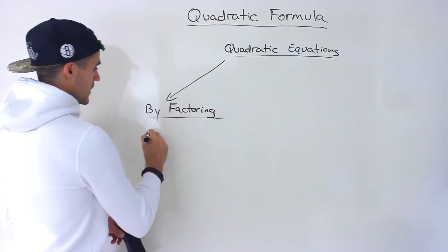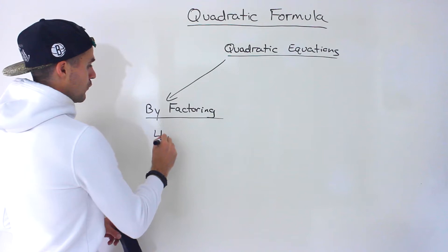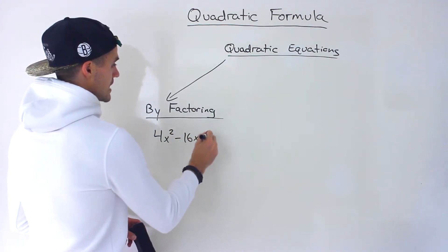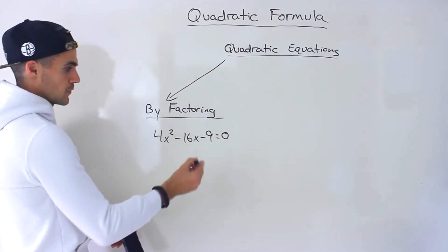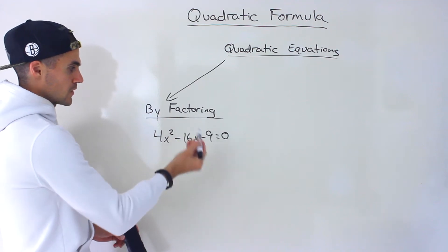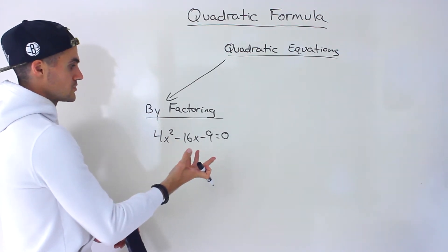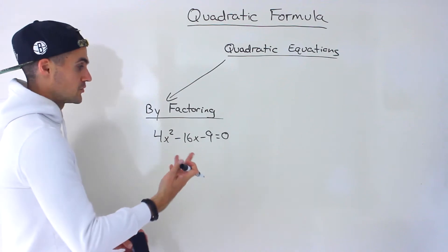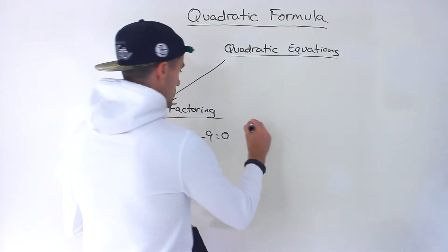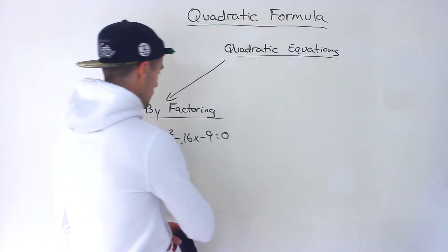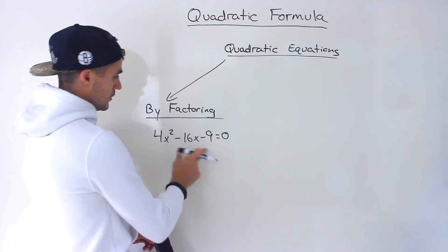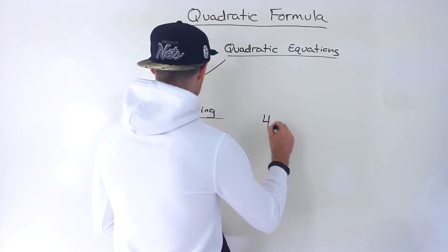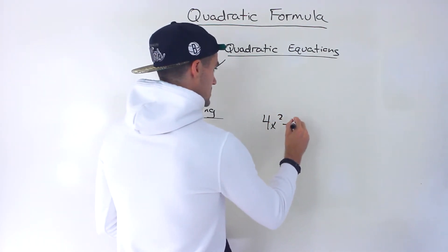So for example, if we have something like 4x² minus 16x minus 9 equals 0 — a quadratic equation like this where we have to solve for the x values — well, a lot of times these quadratics are going to be able to factor smoothly. Taking this and factoring it, notice we can't take anything out of this quadratic, so let's do this on the side here.